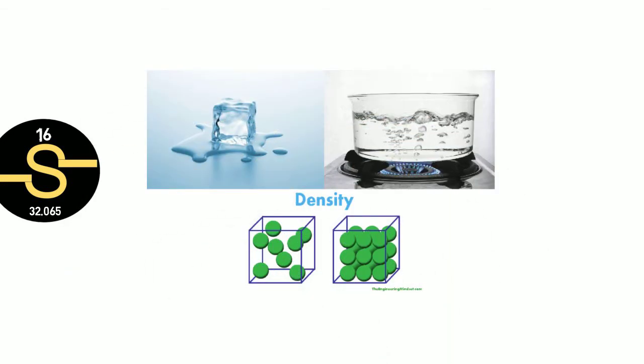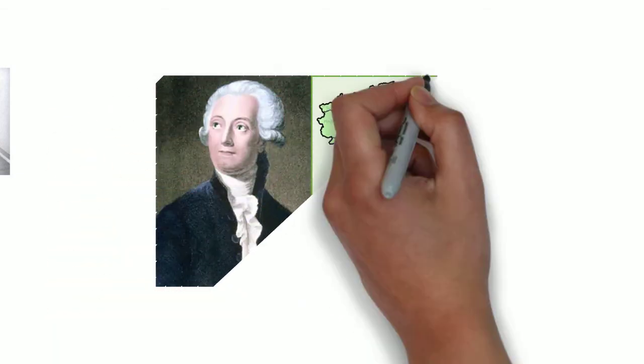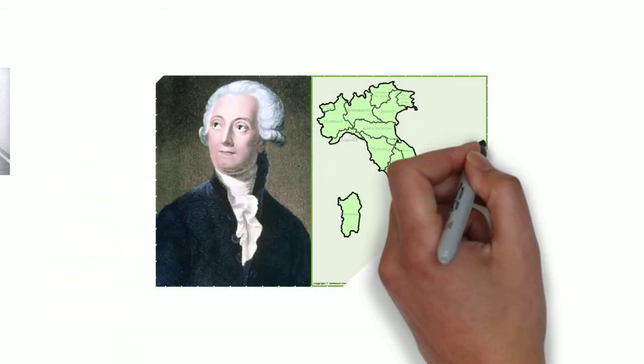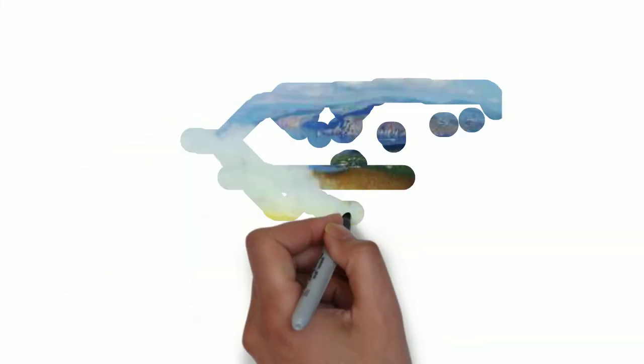It has been used since ancient times, but it got its popularity in 1777 by French chemist Antoine-Laurent de Lavoisier when it was mined in Sicily.